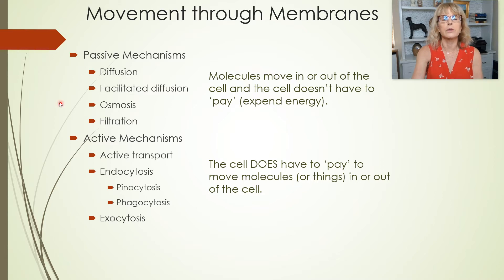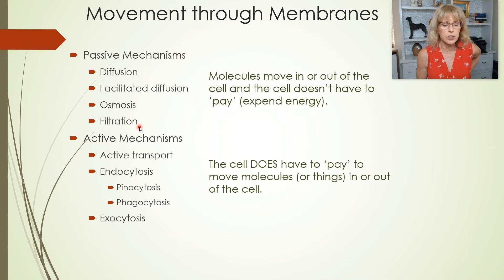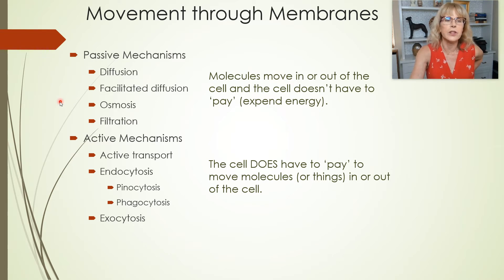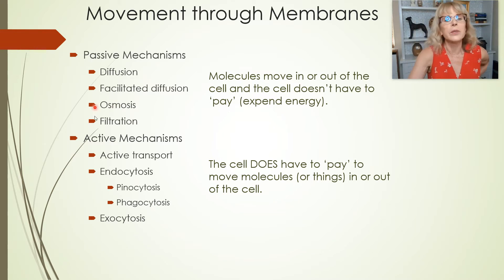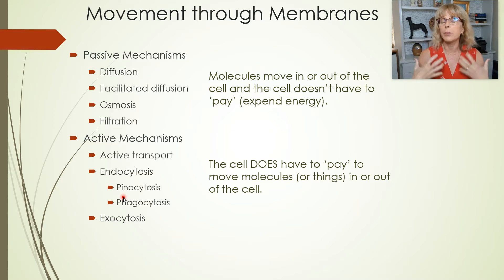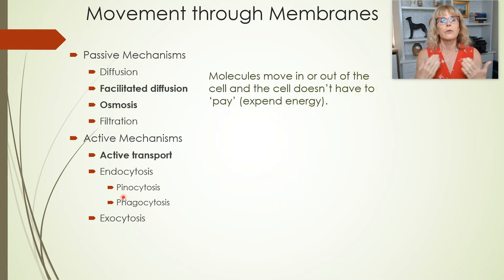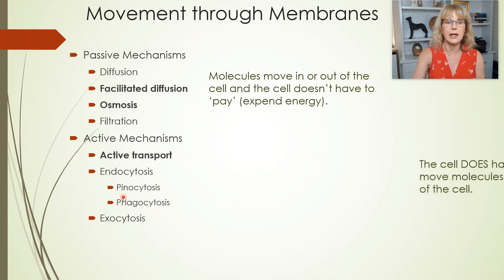The passive mechanisms that power movement of substances across the cell membrane are diffusion, facilitated diffusion, osmosis, and filtration. I'm not going to talk about filtration here, although it's important when we get to the kidneys and blood vessels. We will talk about diffusion, facilitated diffusion, and a lot about osmosis. For active mechanisms, I won't focus much on endocytosis and exocytosis — active transport is the most important active mechanism for the physiology we're learning in lab.